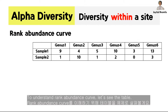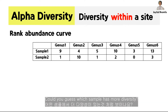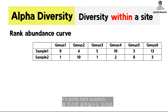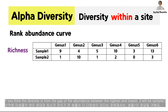To understand rank abundance curve, let's see the table. For alpha diversity, we will see how many different bacteria are there within each sample. Could you guess which sample has more diversity? If you think higher number of species in the sample has more diversity, it will be sample 1. If you think that diversity comes from the gap of the abundance between the highest and the lowest, it will be sample 2.